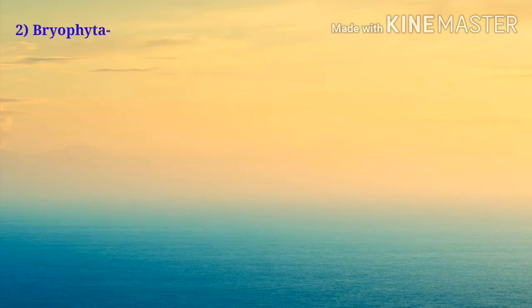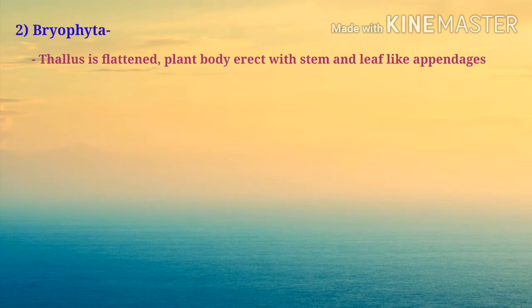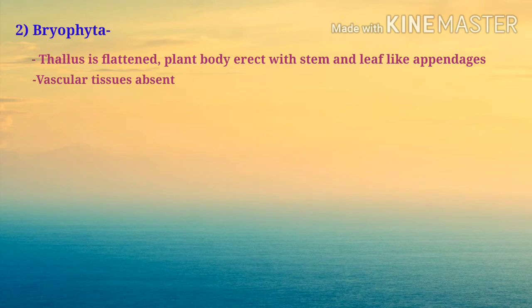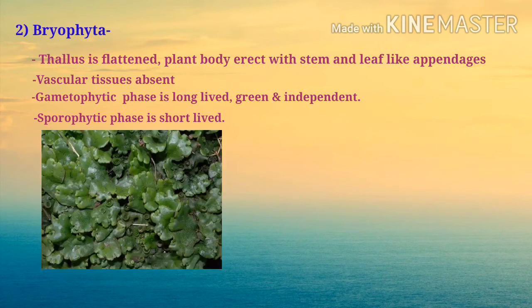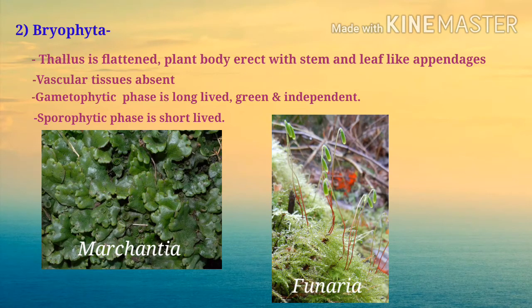The second division is bryophyta. In bryophyta, the thallus is flattened. The plant body is erect with stem and leaf-like appendages. Vascular tissue is absent. Bryophyta has two phases: gametophytic and sporophytic. The gametophytic phase is long-lived, green, and independent. The sporophytic phase is short-lived. Examples of bryophyta are Marchantia and Funaria.